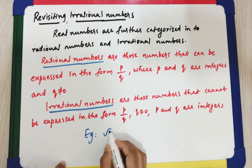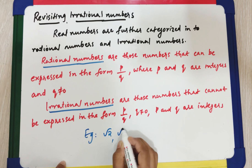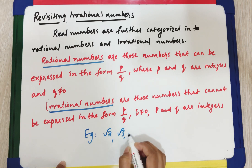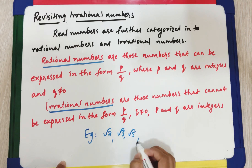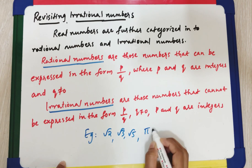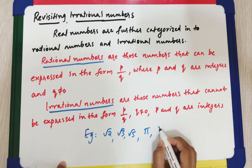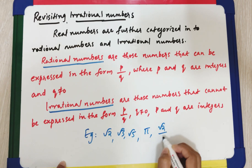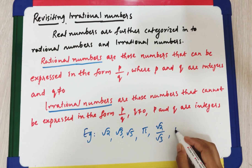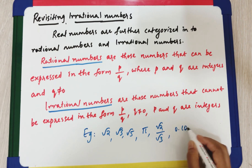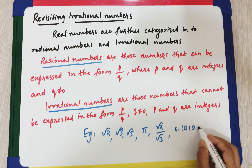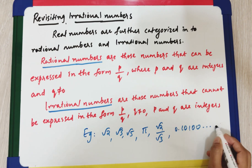Examples of rational numbers include all integers: 1, 2, 3, which can be written as 1/1, 2/1, 3/1, and fractions like 1/2, 2/3, 7/2, 11/13. Examples of irrational numbers include √2, √3, √5, π, √2/√3, and non-terminating non-repeating decimals like 0.101001000…